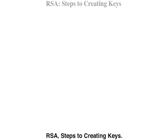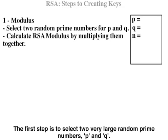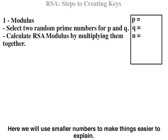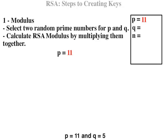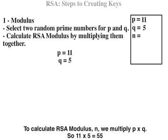RSA steps to creating keys. The first step is to select two very large random prime numbers, P and Q. Here we will use smaller numbers to make things easier to explain: P equaling 11 and Q equaling 5. To calculate the RSA modulus N, we multiply P by Q. So 11 times 5 equals 55.